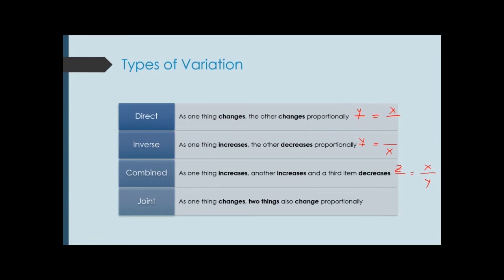Joint variation is where one output changes and two inputs are changing at the same rate proportionally — both x and y are in the same part of the proportion. The key difference between all four types is really where your input variables go, and the type of variation determines how you write the equation.